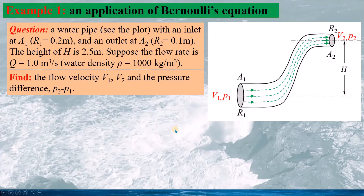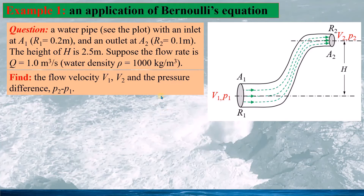Now we look at one example applying Bernoulli's equation. The problem involves a pipe with an inlet at A1 where R1 equals 0.2 meters, and a smaller outlet at A2 where R2 equals 0.1 meters. The height h is 2.5 meters, the flow rate is 1 cubic meter per second, and the water density is 1000 kg per cubic meter. We are asked to find the flow velocities V1 at A1 and V2 at A2, and the pressure difference P2 minus P1.